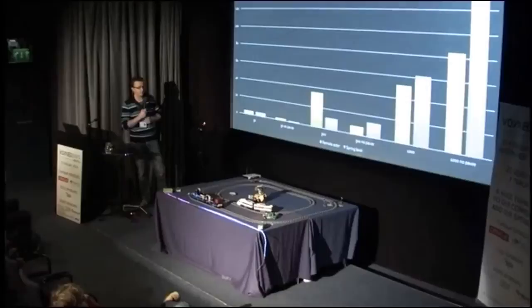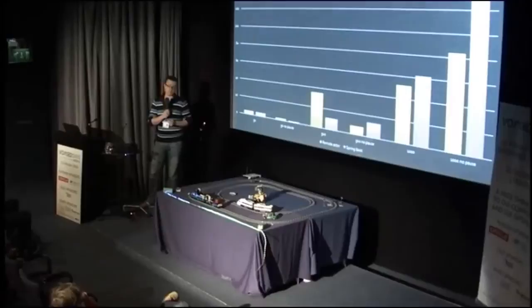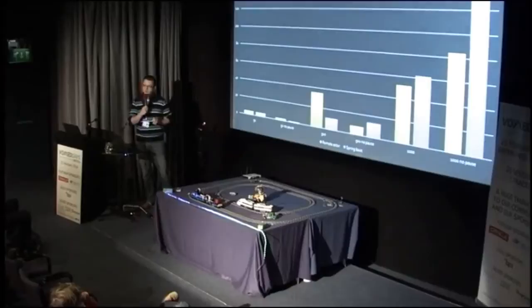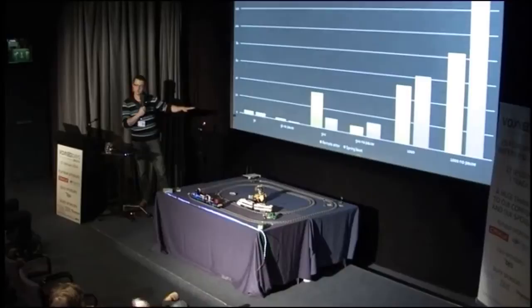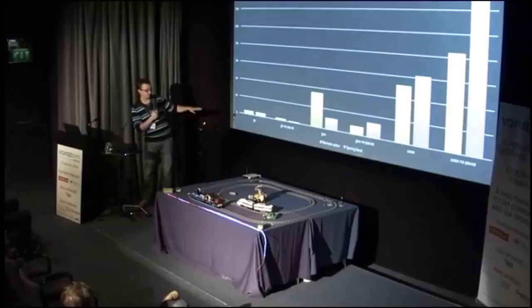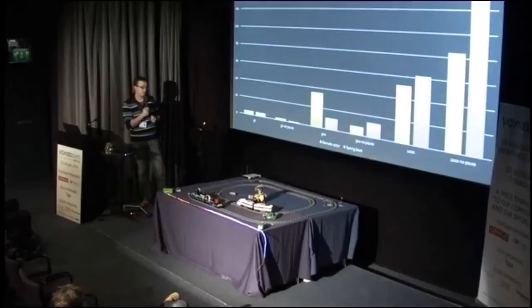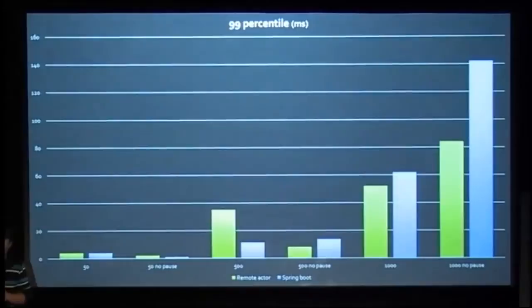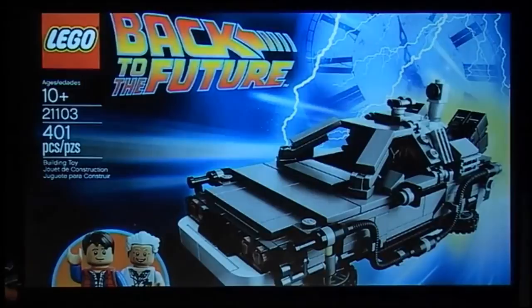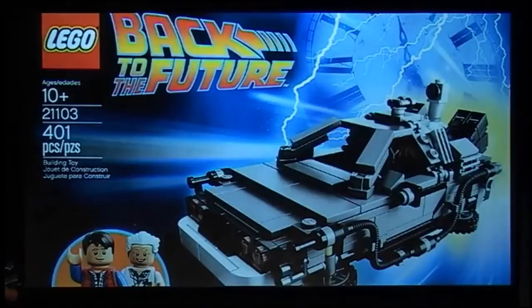We're not trying to tell you that you should always use actors for remote services. We wanted to share measurable results. There was one anomaly: remote actors with 500 users with pause took quite a long time, which we have no explanation for. We ran every test three times and averaged the results. There was also an interesting finding that no-pause tests for 50 users were actually faster than with-pause tests, possibly because some parts are kept in memory, but again we have no explanation.